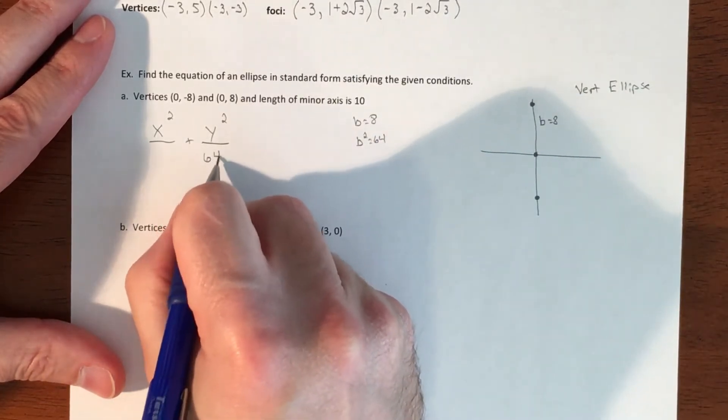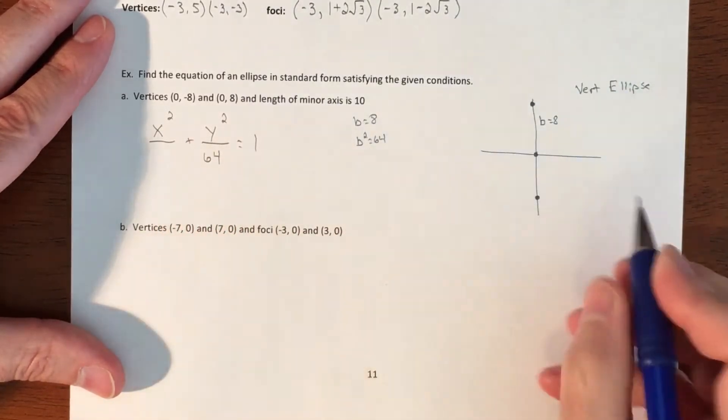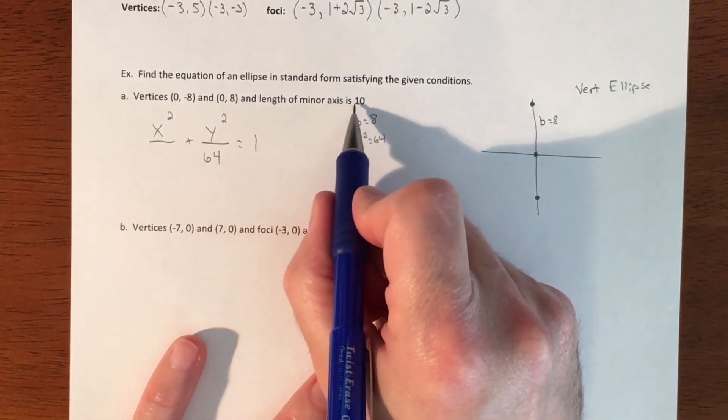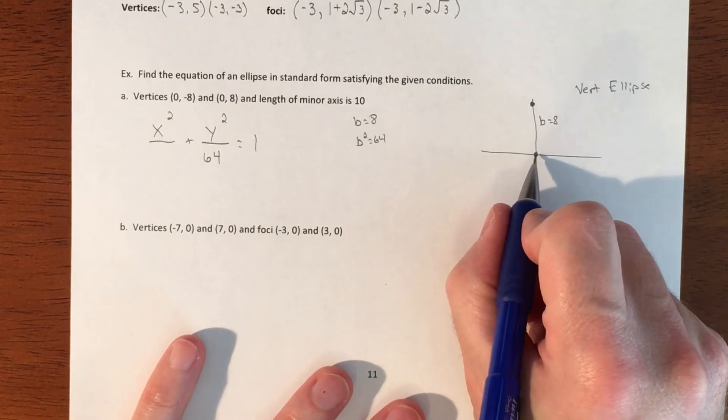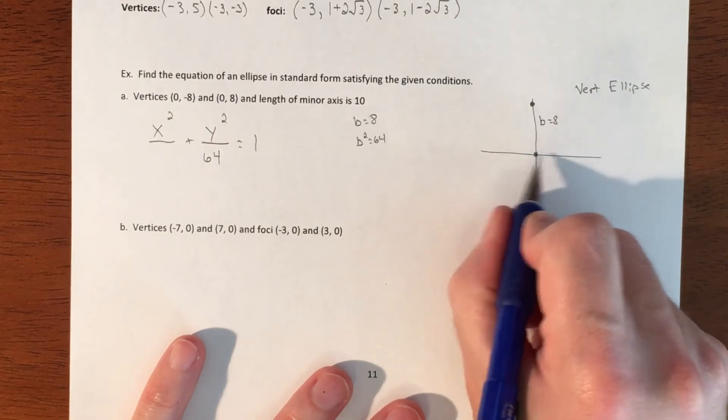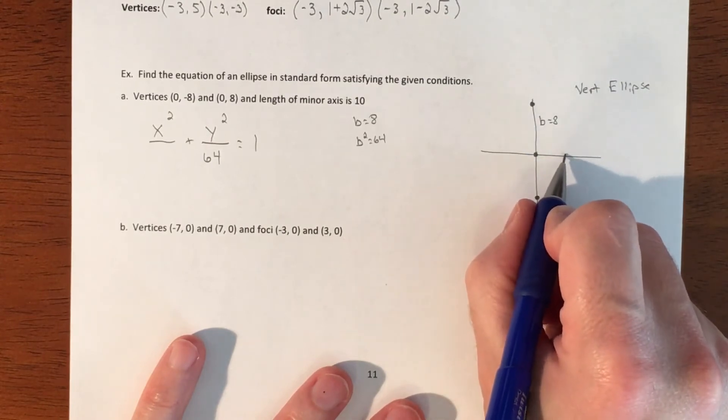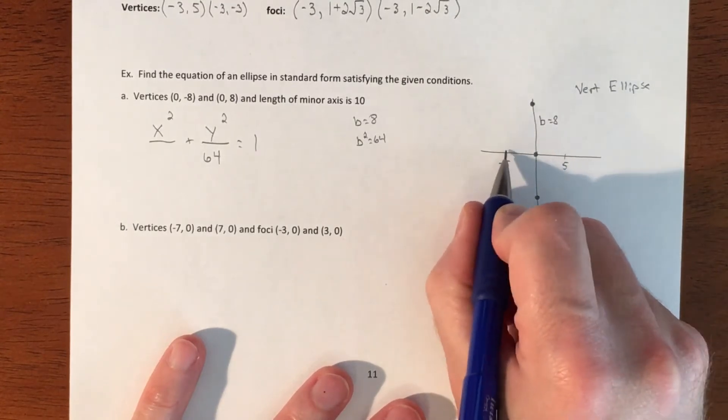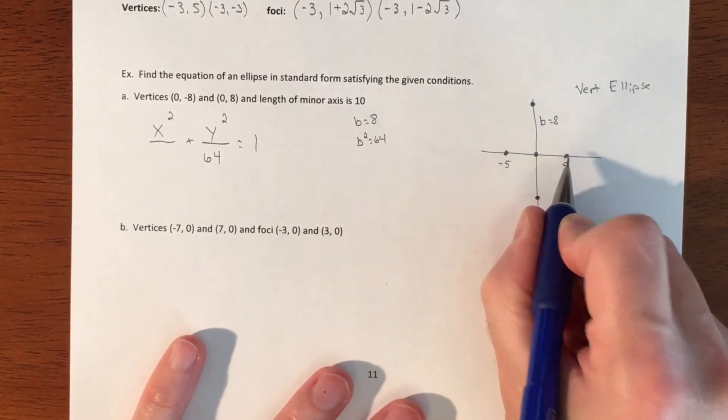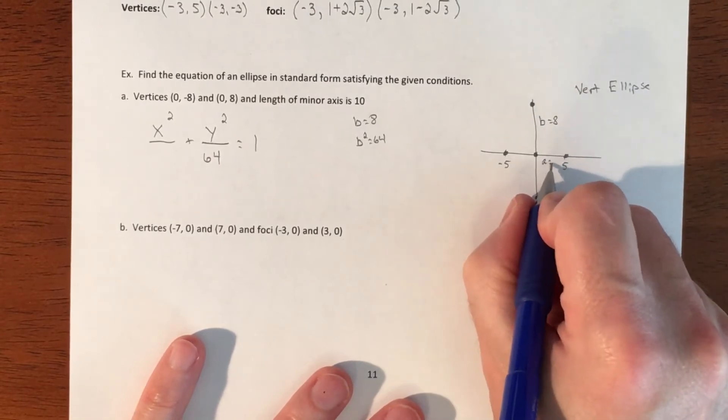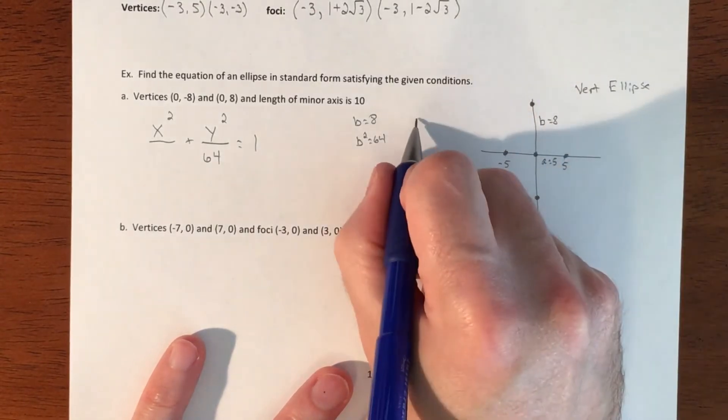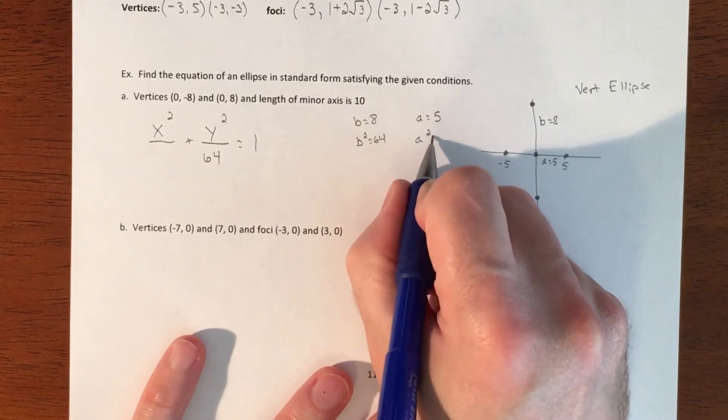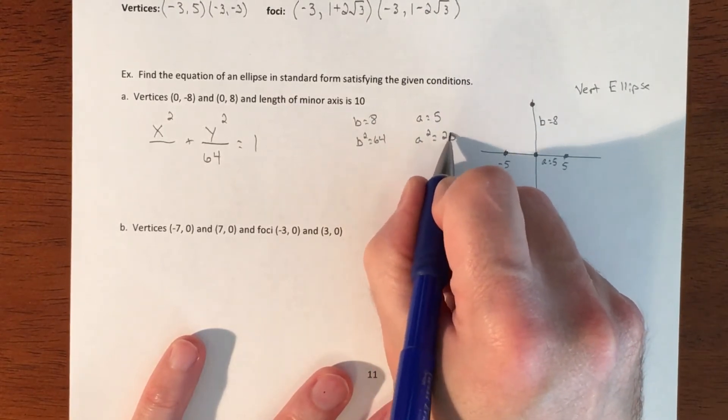We have our value under our y's. What we need is the value under your x's. The length of the minor axis is 10, so the length in each direction is 5. That's your a value, so if a equals 5, then a squared equals 25.